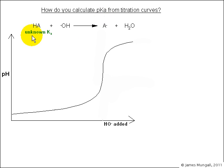So if we have a weak acid HA with an unknown Ka, we can titrate this against a strong base to form A minus and water. This would give a pH curve which starts low when there's only acid in the conical flask and rises as the acid is neutralized by the hydroxide.